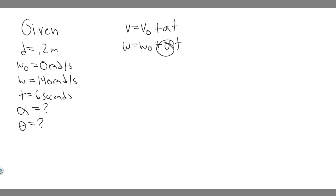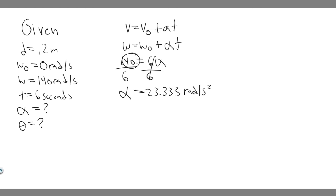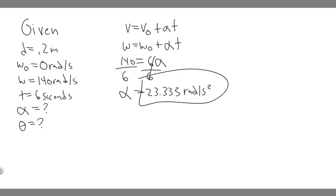Plugging in: 140 equals 0 plus alpha times 6, so it's just 6 alpha. Dividing both sides by 6: 140 divided by 6 gives us the angular acceleration, which is 23.333 radians per second squared. Notice that 140 is in radians per second, and we divided by seconds, so it becomes radians per second squared. So the angular acceleration is 23.33 radians per second squared.